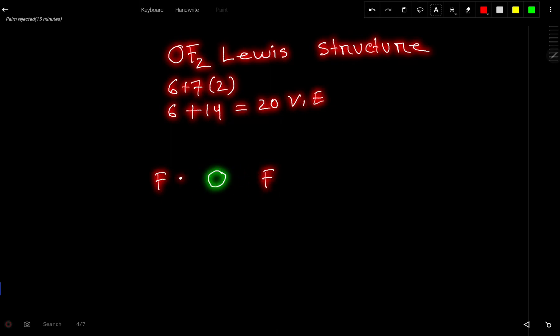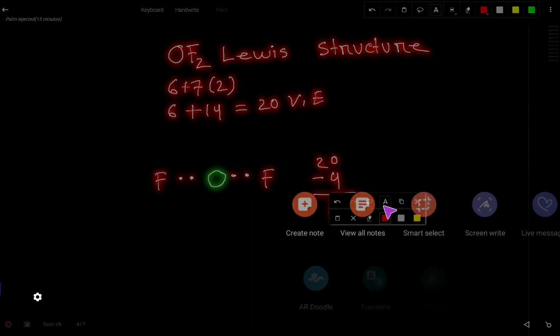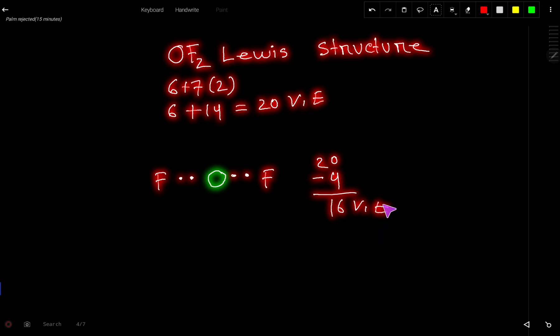So to connect these 3 atoms, what will I do? I will put 2 valence electrons between them. Now we have connected these 3 atoms. So we have used 20 minus 4, which is 4 electrons. So 16 valence electrons left.